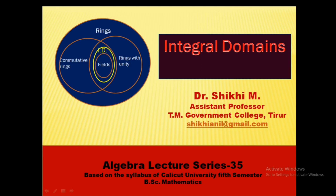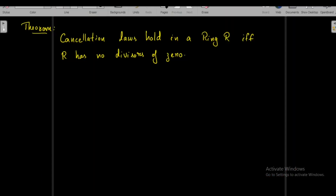Today I will talk about a new algebraic structure named integral domains. We will prove a theorem which states that cancellation laws hold in a ring R if and only if R has no divisors of zero. So let us prove the theorem.